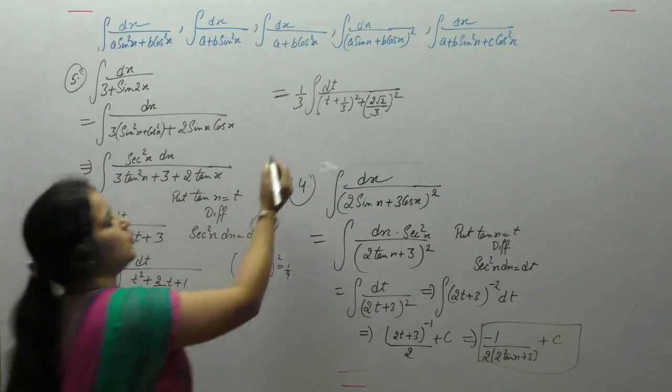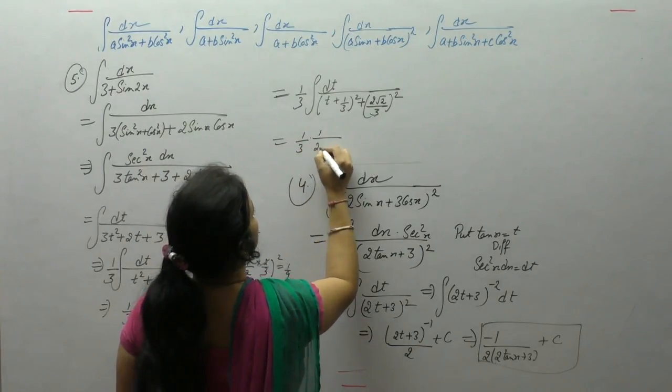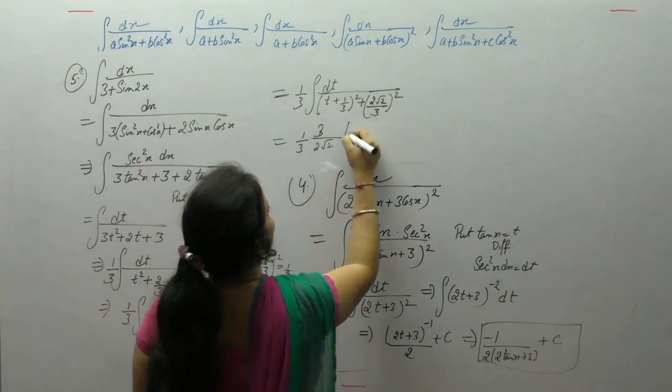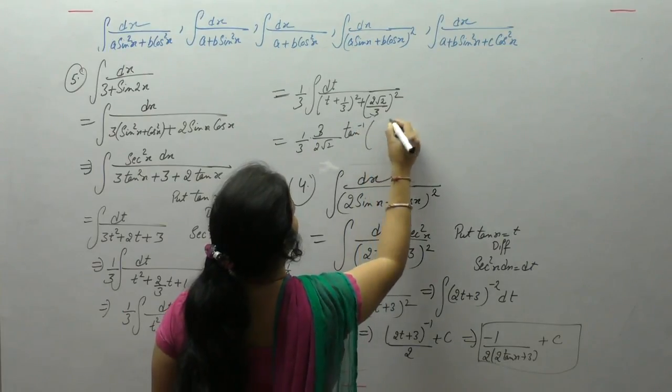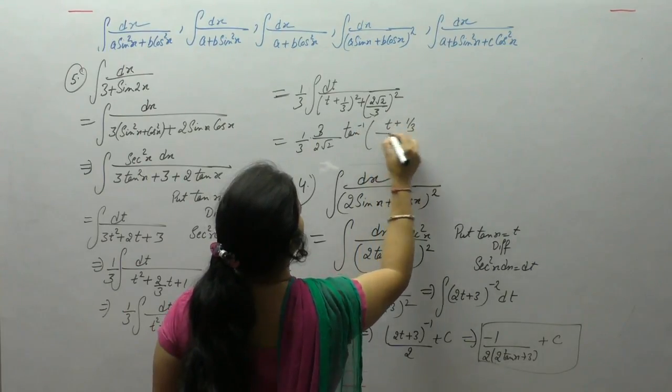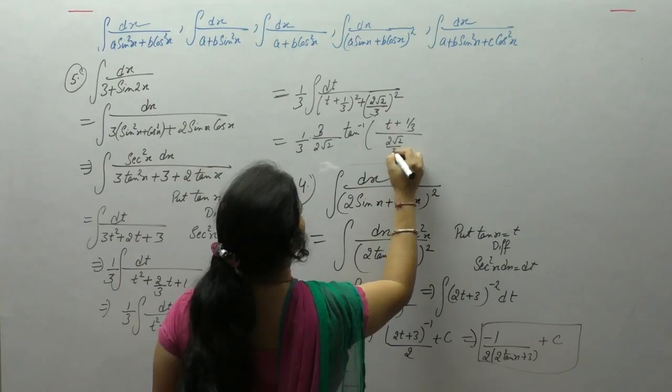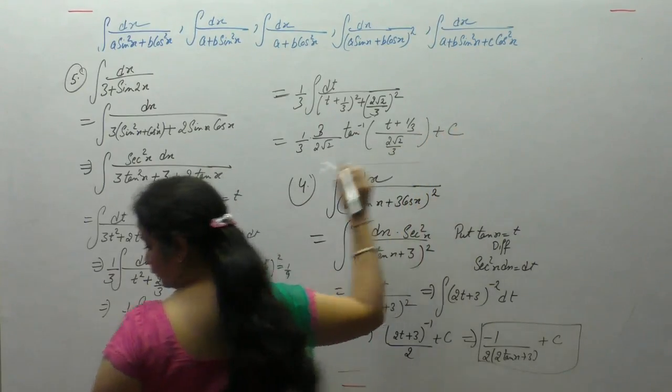is equals to 1 upon a, tan inverse x upon a. Now put the value of t here, t is tan x.